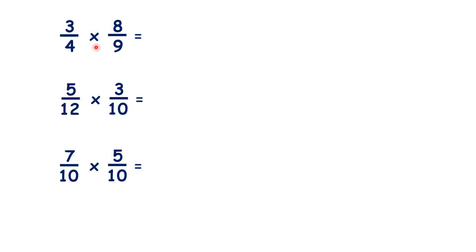We know that to multiply fractions, we can just multiply the numerators together and then multiply the denominators together. But here's an extra step which we can use that might make things easier for us: we can cross simplify our fractions.